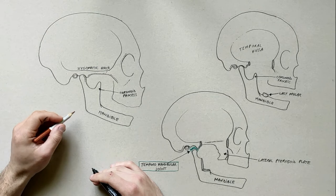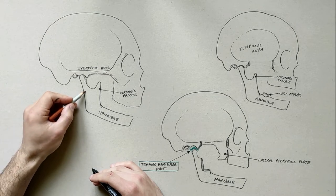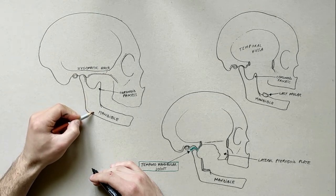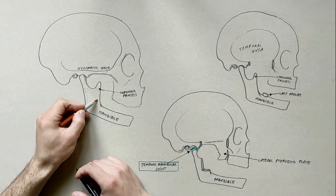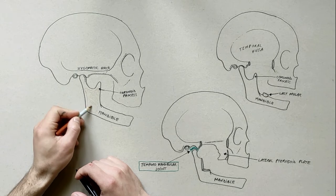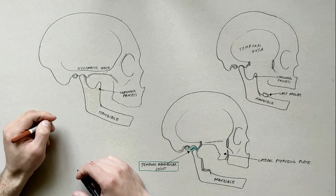First we will indicate the masseter muscle. This muscle has two heads, which are inserting on the angle and lateral surface of the ramus of mandible and also on the lateral surface of the coronoid process.